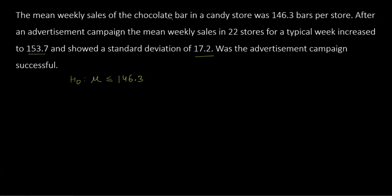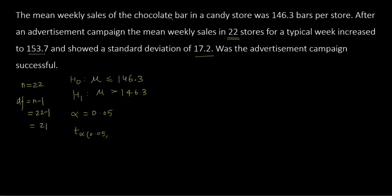The alternative hypothesis is that average sales went above 146.3 chocolate bars. Alpha is 0.05. The sample statistic is x-bar. Degrees of freedom: there are 22 stores, so n is 22 and degrees of freedom is 22 minus 1 equals 21. The t-alpha value at 0.05 with 21 degrees of freedom for a one-tailed test is 1.721.